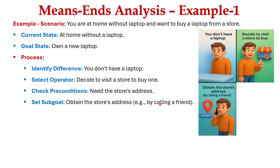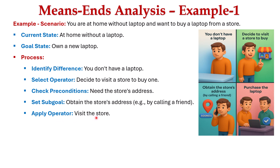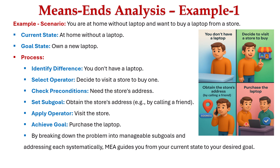Next, we apply the operator — we go to the store. After reaching the store, we purchase the new laptop. The goal is now achieved: earlier we did not have a laptop, but now we have a new laptop. We have moved from the current state — without a laptop — to the goal state — having a new laptop. By breaking down the problem into manageable sub-goals and addressing each systematically, means-ends analysis guides you from the current state to the desired goal state.